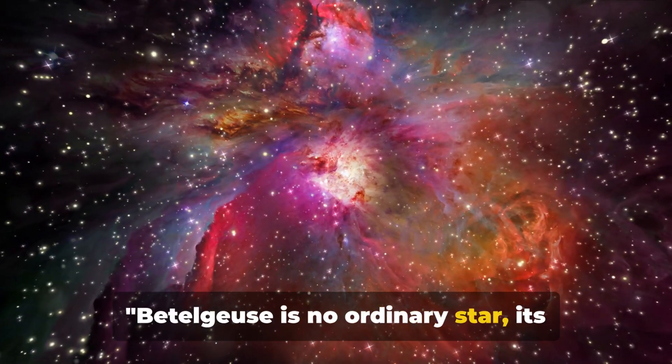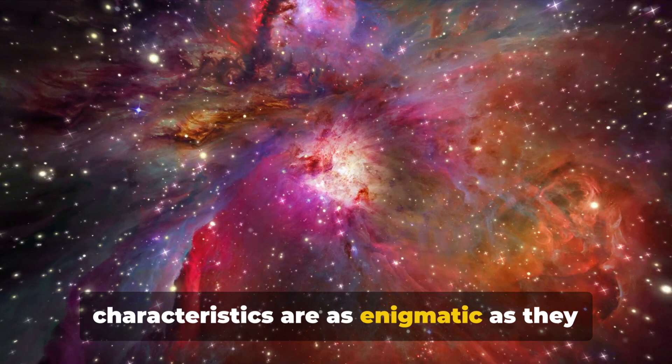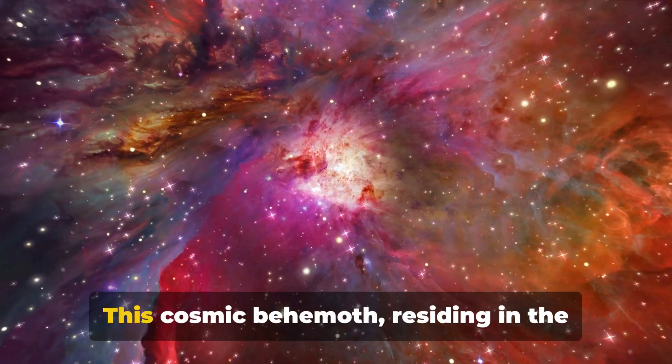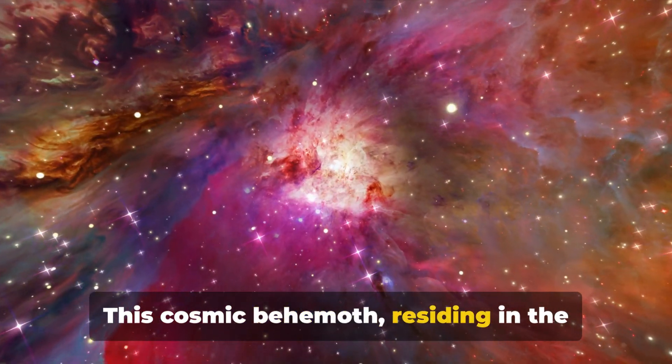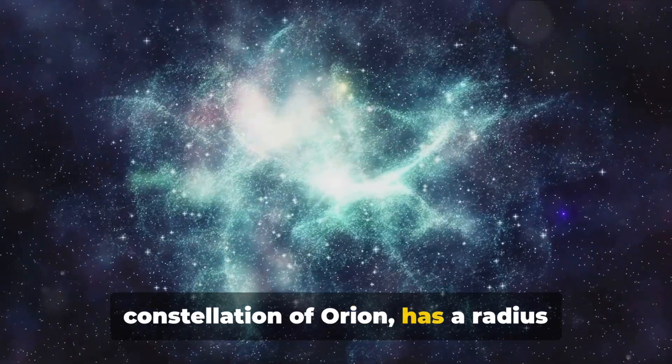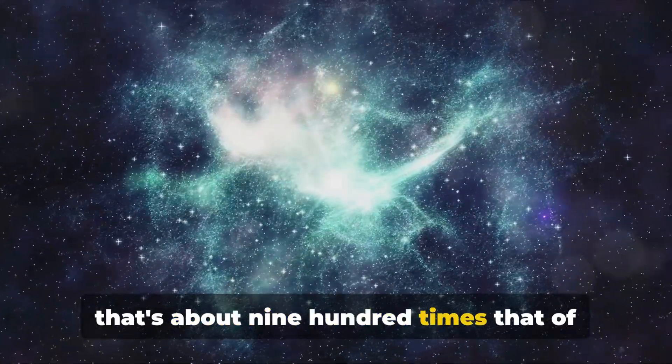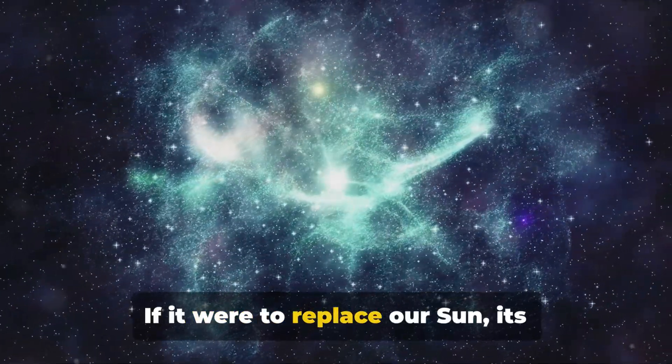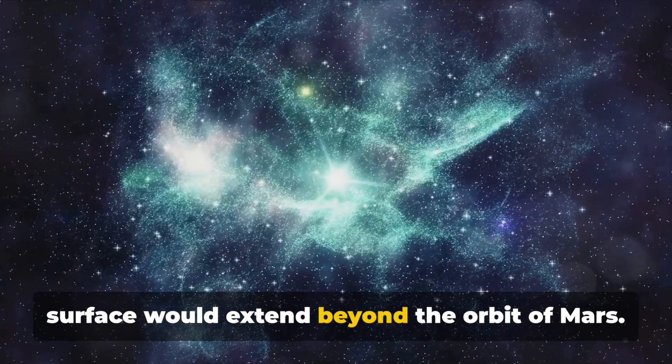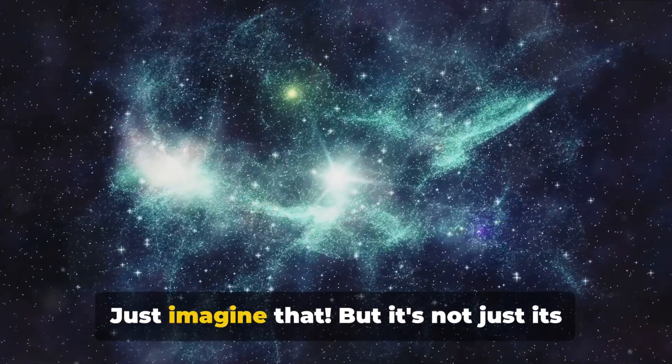Betelgeuse is no ordinary star, its characteristics are as enigmatic as they are fascinating. This cosmic behemoth, residing in the constellation of Orion, has a radius that's about 900 times that of our sun. If it were to replace our sun, its surface would extend beyond the orbit of Mars. Just imagine that.